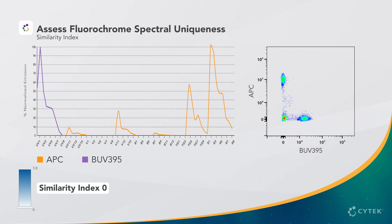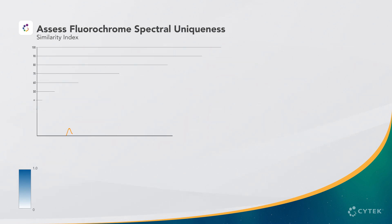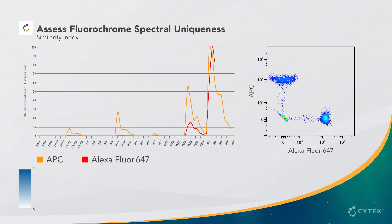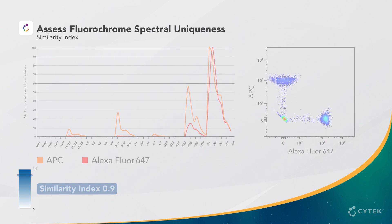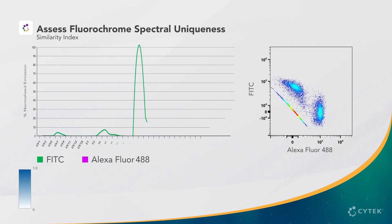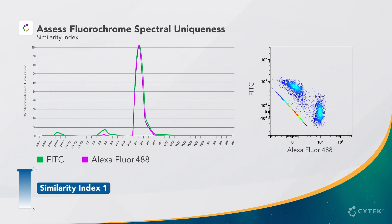When we analyze unmixed data with BUV395 and APC, we observe good resolution between mutually exclusive positive populations. With APC and Alexa Fluor 647, their similarity index is 0.9. This is a high value, but it is still possible to distinguish these fluorophores in a panel, as we can see in this data plot. In the last example of combining FITC and Alexa Fluor 488, we reach a similarity index of 1, which means these two dyes are nearly identical and cannot be used together on the same panel.